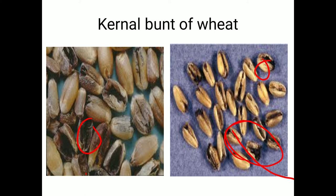If infected seeds are used for sowing, germination does not take place and blackish powder is observed instead. Regarding perpetuation, it is a soil-borne disease, so the primary source of infection is infected soil. For control, clean the field by collecting and destroying infected plant parts, do deep plowing during summer season, practice crop rotation, and treat seeds with Carboxin (Vitavax) to prevent the spread of disease.